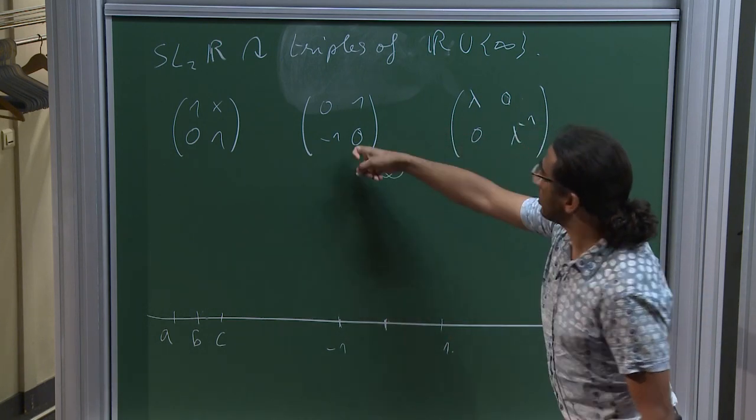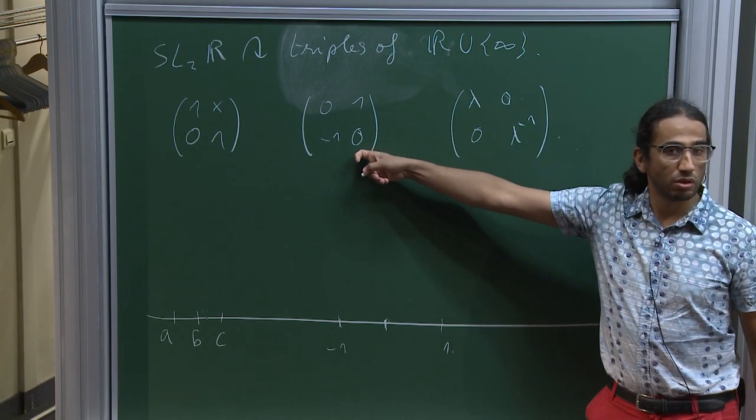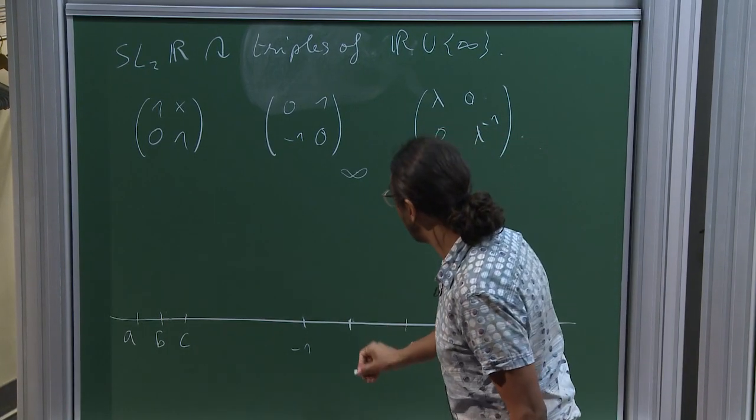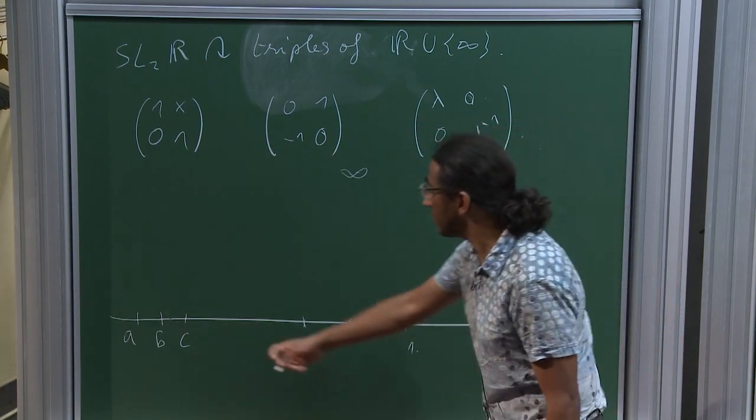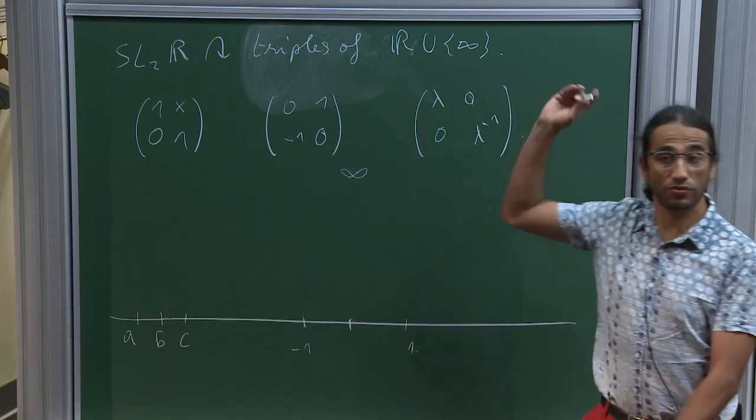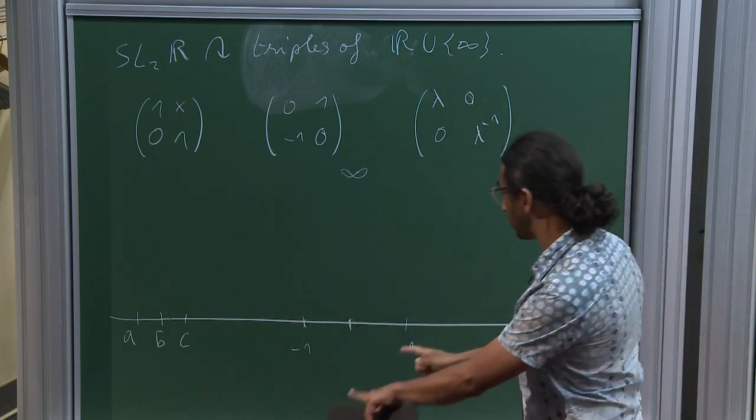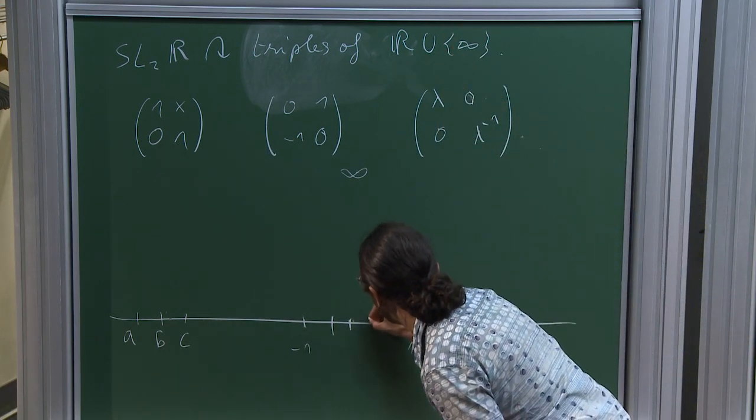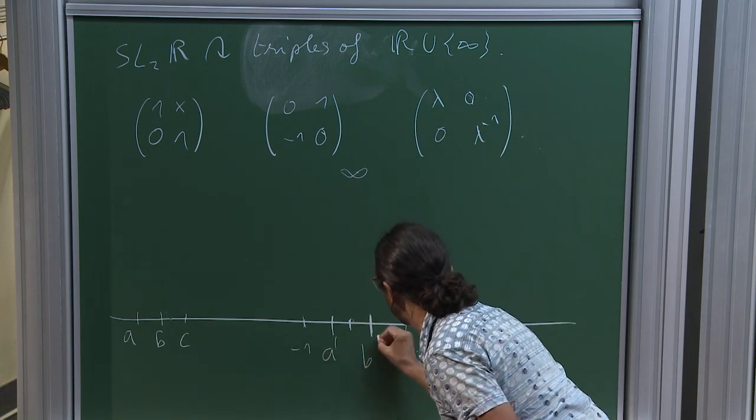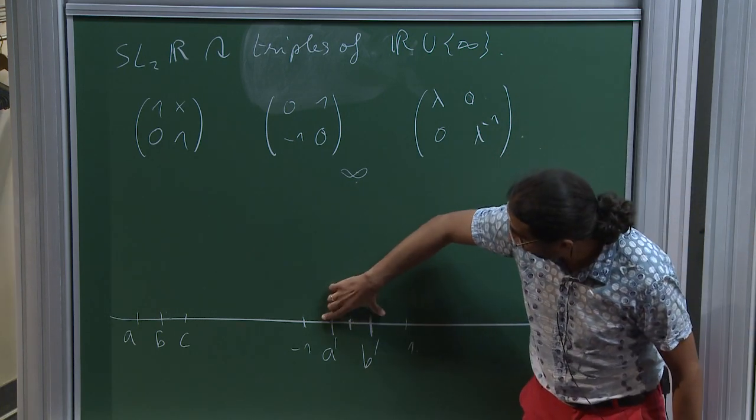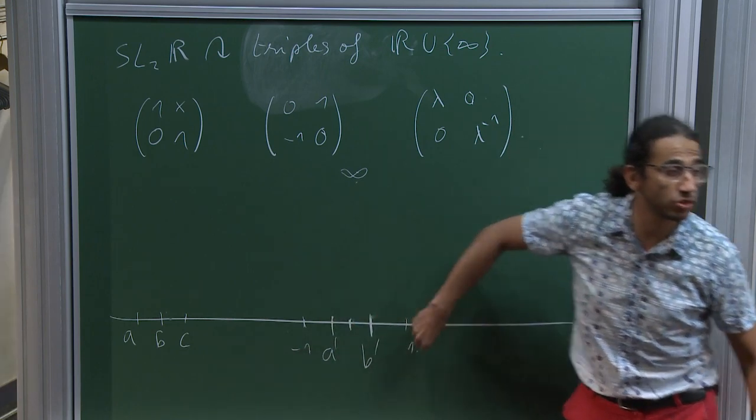So then I use this one, which takes zero to infinity. So using this one and this one in order, I'm taking some of those three points to infinity. Now using this one again, which is fixing infinity, I'm taking the two others so that they are centered at zero. And now using this one, which is a dilatation, then I'm just pushing them apart until I reach minus 1, 1. So this shows that I can reach from any triple, I can reach minus 1, 1, infinity.